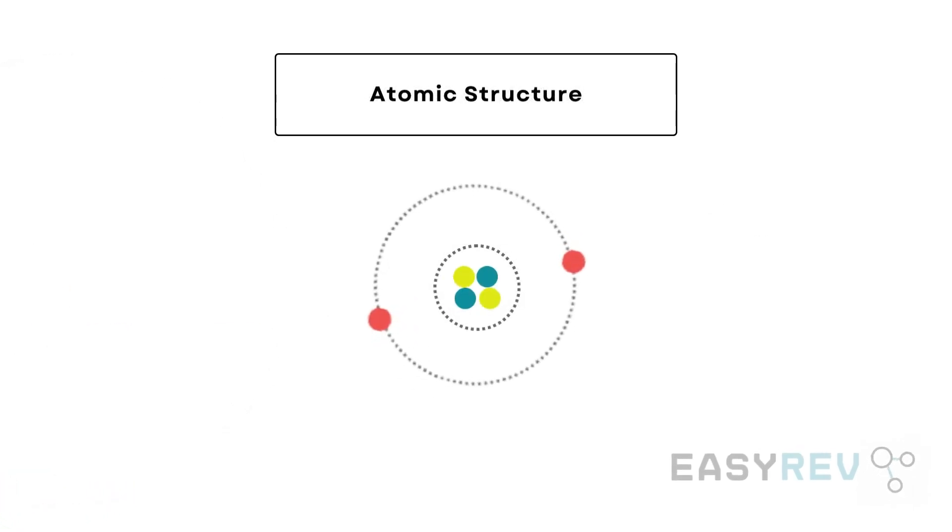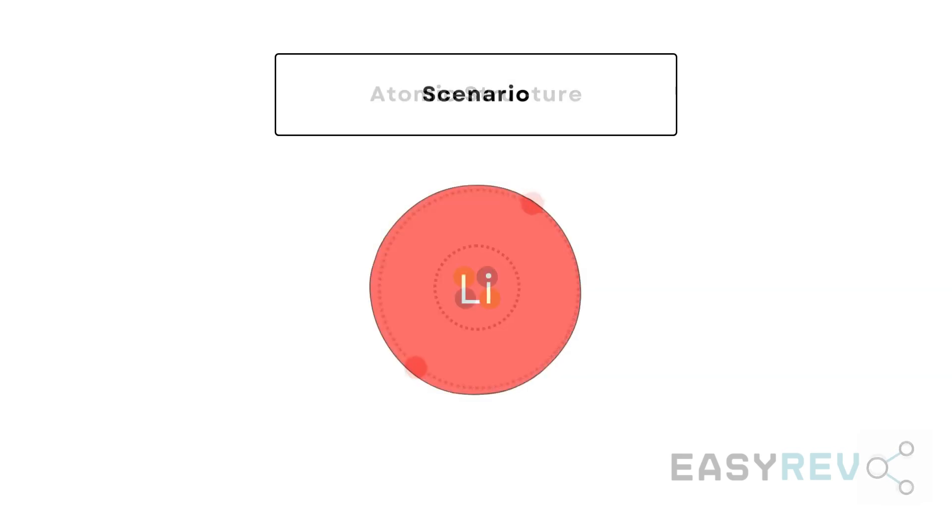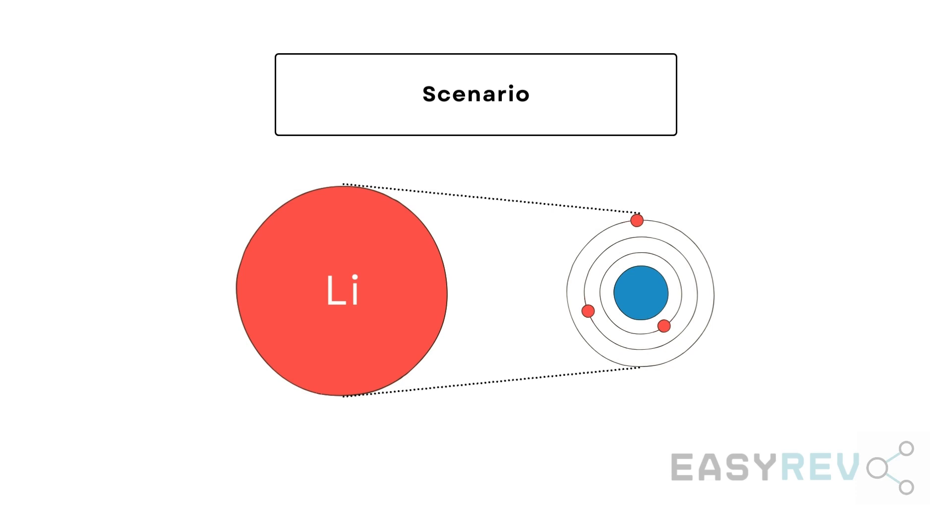Now that we've discussed all these features, let me propose a very simple scenario to you. Suppose I handed you an atom and I asked you to tell me how many protons, neutrons, and electrons does this atom contain. But the catch here is that I want you to do all of this without needing to dissect into the atom.